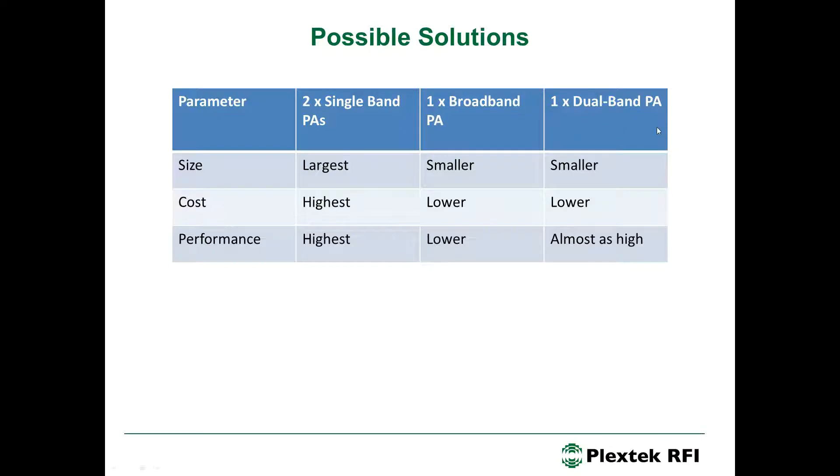An alternative way of achieving a smaller design and a lower cost design is to go for a switched dual-band PA. It would have the advantages of being smaller and lower cost as the broadband PA does, but we would expect it to have higher performance than the broadband PA, and a performance that was almost as high as the two single-band power amplifiers. So, we progressed a dual-band power amplifier solution based on this analysis of performance, size and cost.